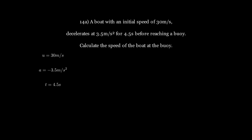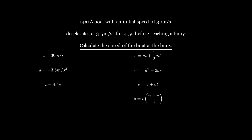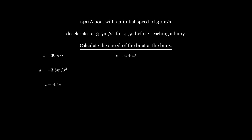Our task is to calculate the speed of the boat at the buoy, which means we have to calculate the final velocity. The equation V = U + AT is most suitable as it consists of V, U, A, and T. By substituting those values into the equation, we obtain V = 14.25 meters per second.